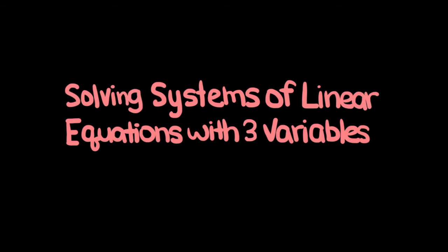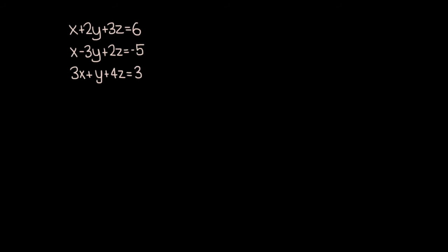In this video, we will be going over how you can solve systems of linear equations with three variables. Here we have our first problem. We have three equations: x plus 2y plus 3z equals 6, x minus 3y plus 2z equals negative 5, and 3x plus y plus 4z equals 3. We're looking for values of x, y, and z that simultaneously satisfy all three equations. We're going to solve this system by picking two pairs of two equations and eliminating the same variable from both of those pairs.